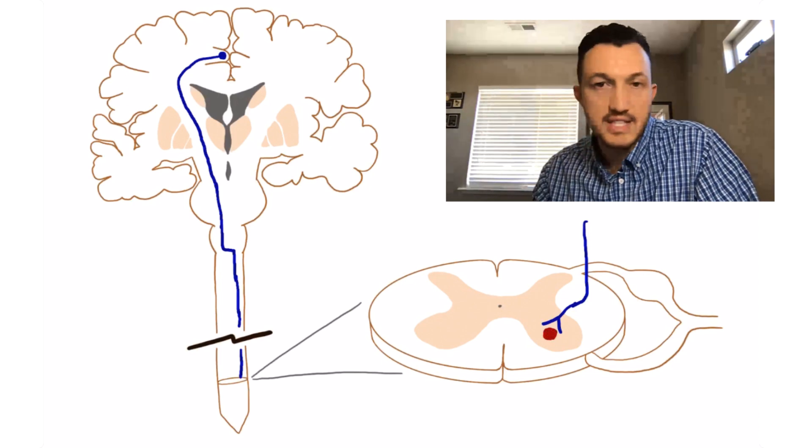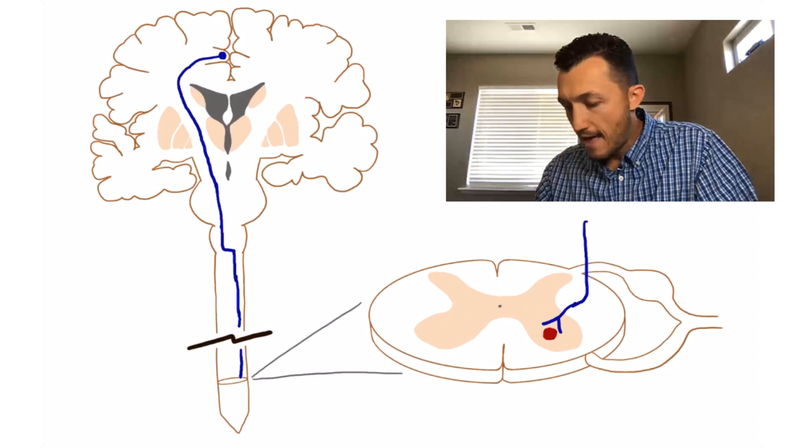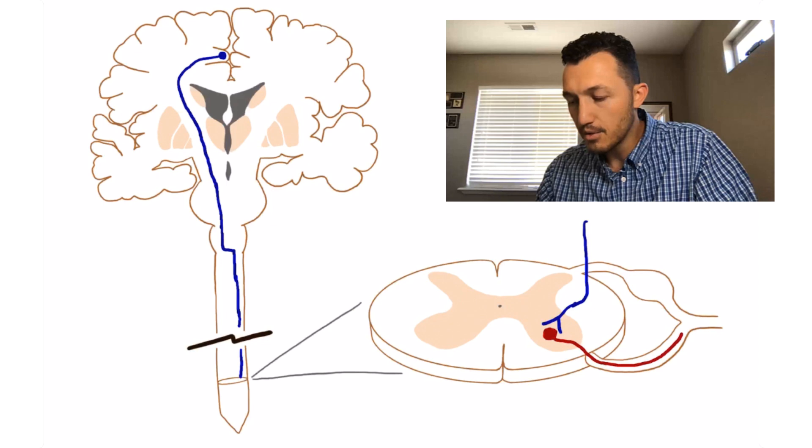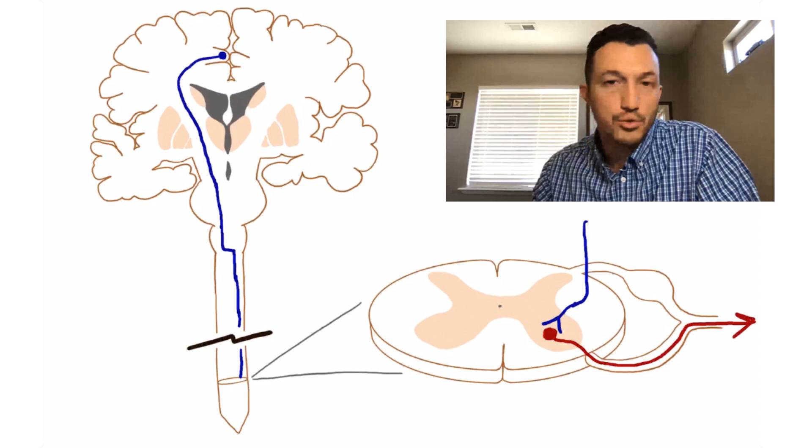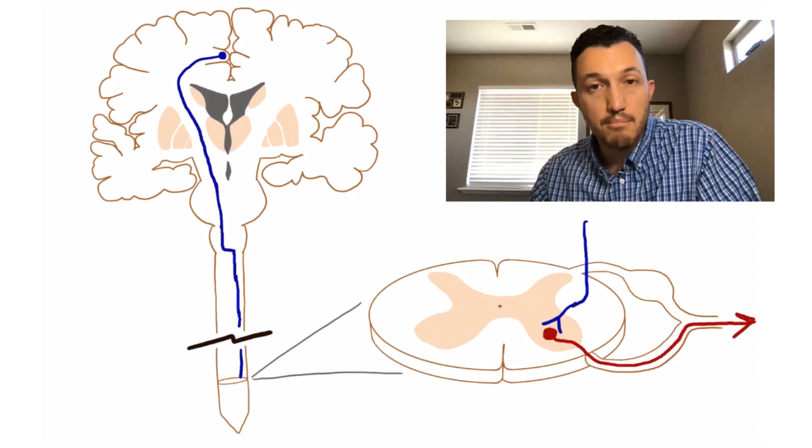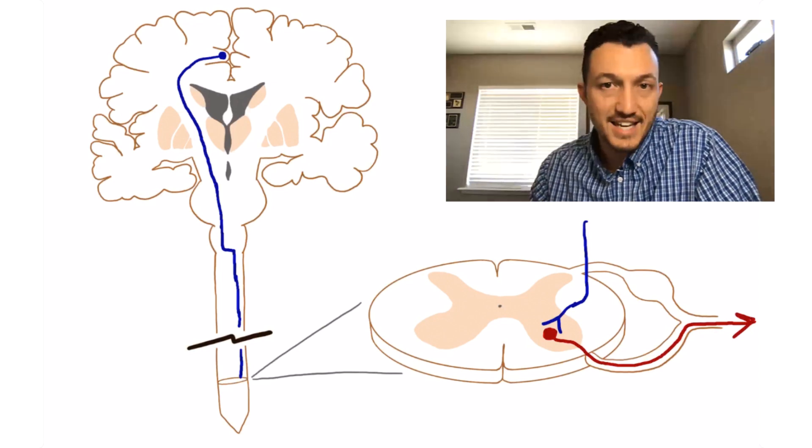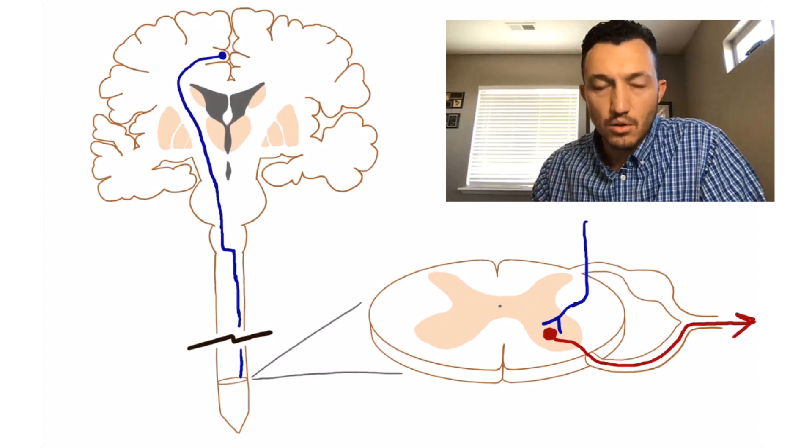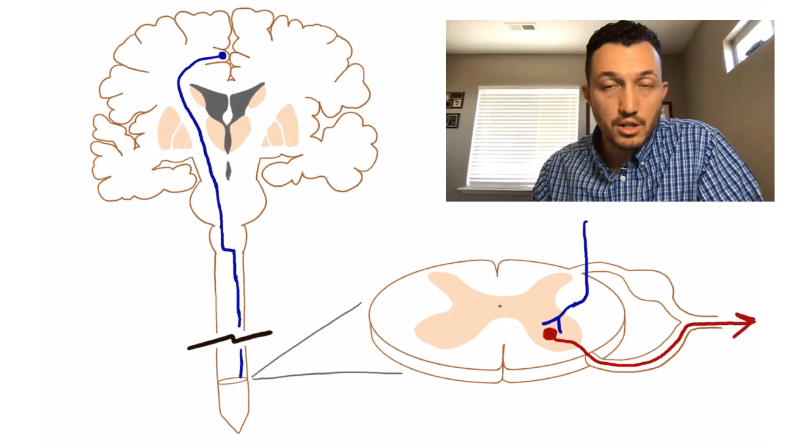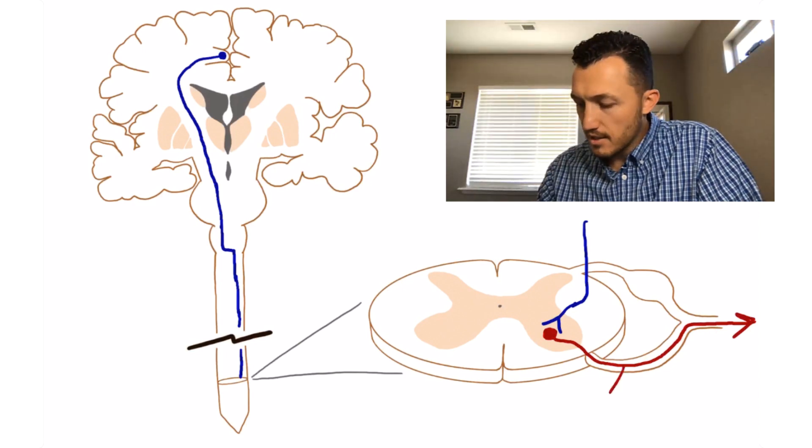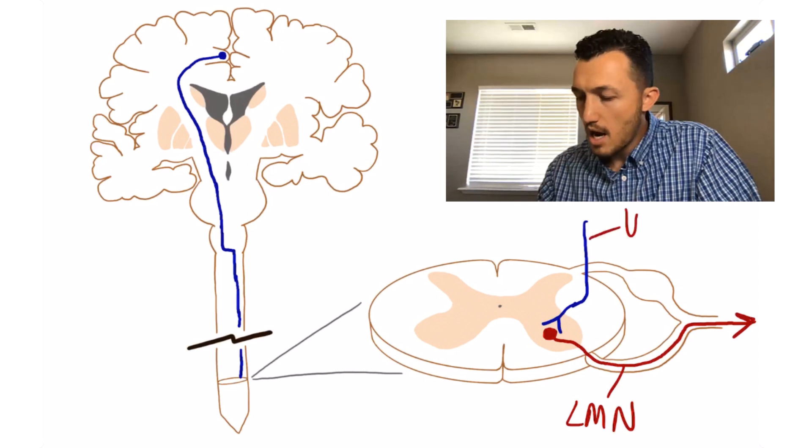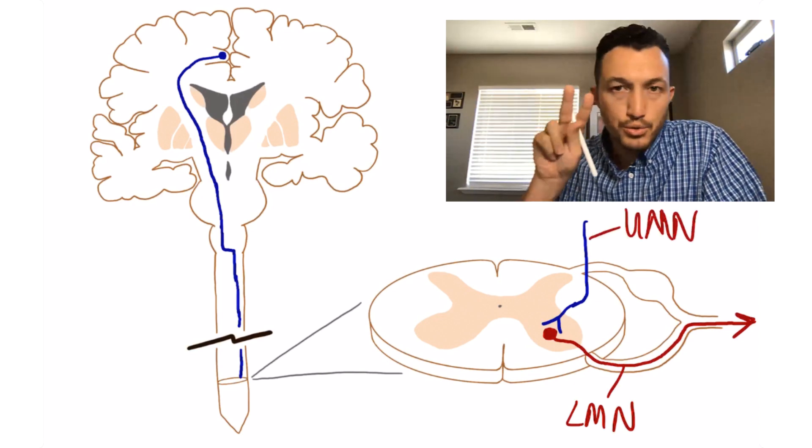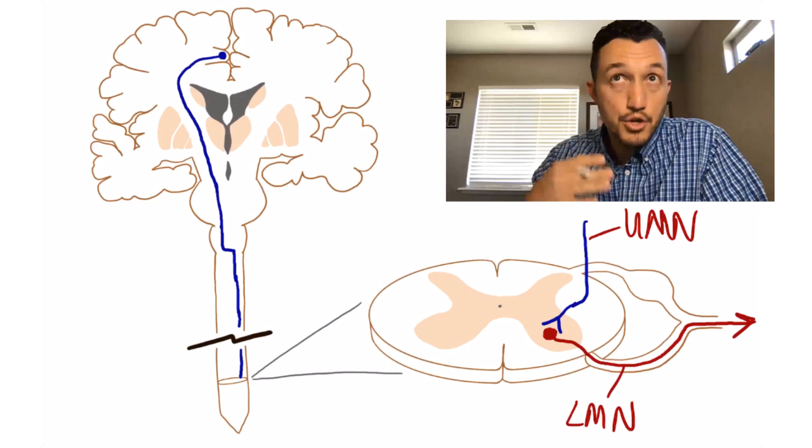And the axon from that lower motor neuron is then going to exit through the anterior rootlet here, which joins with the spinal nerve, and it will travel out then down to the motor end plate, or the section of the muscle to which it's destined to synapse, and releasing acetylcholine there at the neuromuscular junction to cause muscular contraction. So the red here then is our lower motor neuron, and the blue is our upper motor neuron. So two cell lengths, two neurons in length, and that makes up our corticospinal tract.